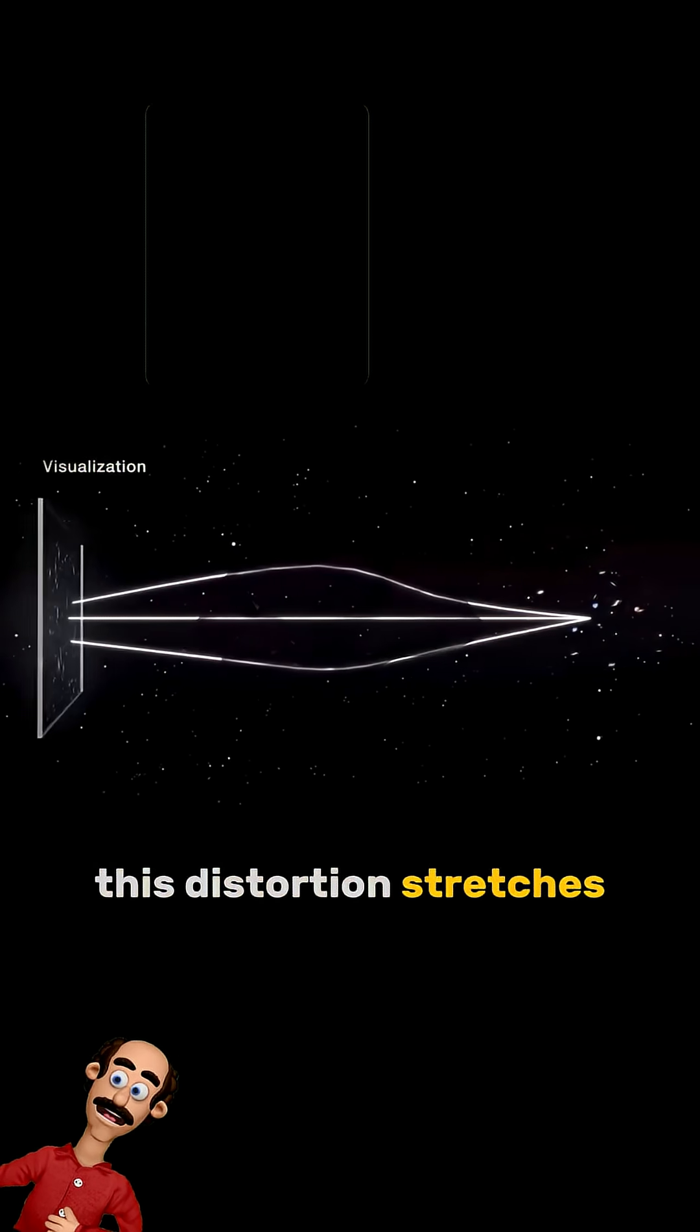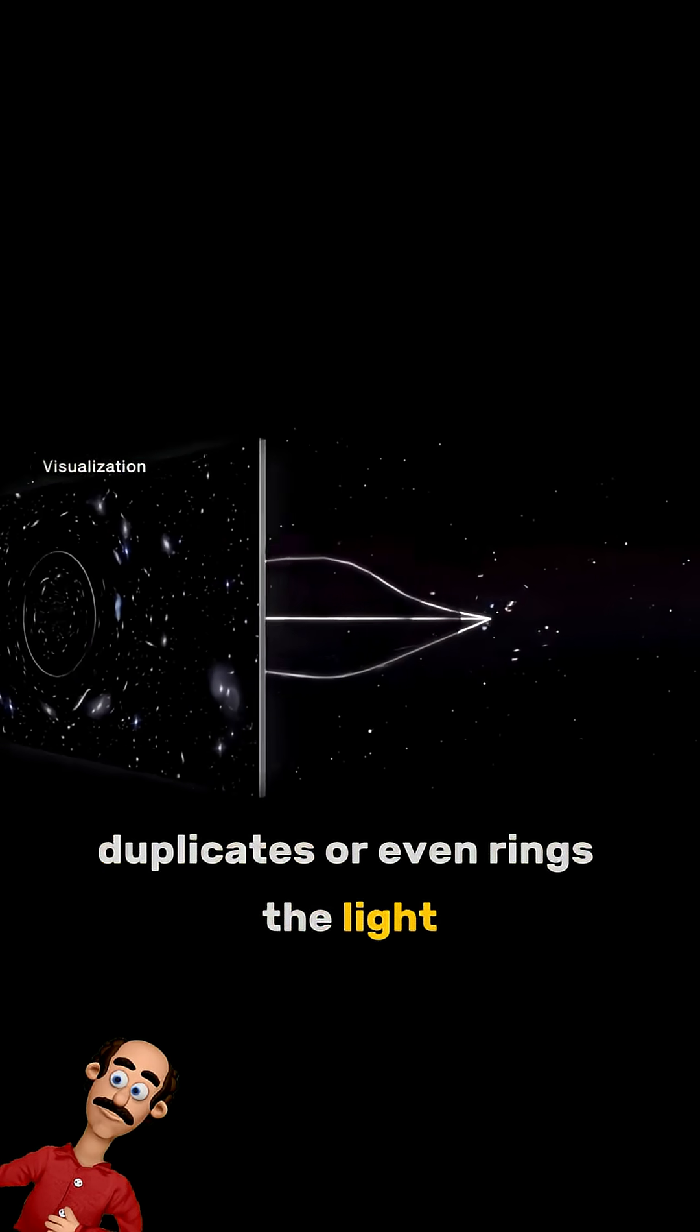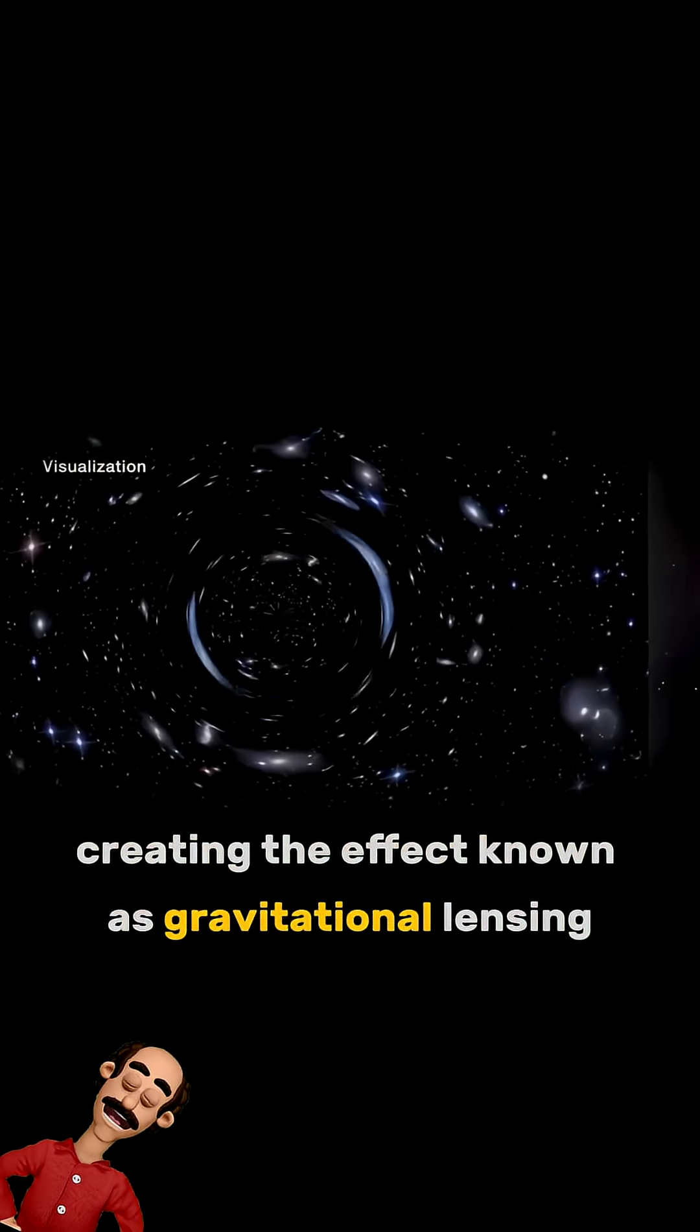This distortion stretches, duplicates, or even rings the light, creating the effect known as gravitational lensing.